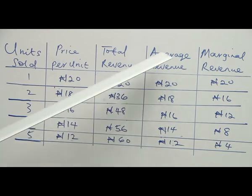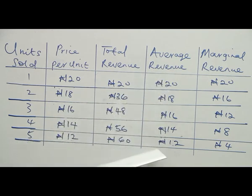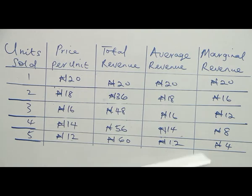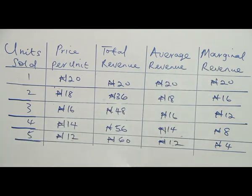To repeat: average revenue is decreasing, and marginal revenue is below average revenue. This is unlike a perfect market where average revenue and marginal revenue are equal. The key difference between imperfect and perfect markets under revenue analysis is that price is constant under a perfect market, while under an imperfect market, price varies.